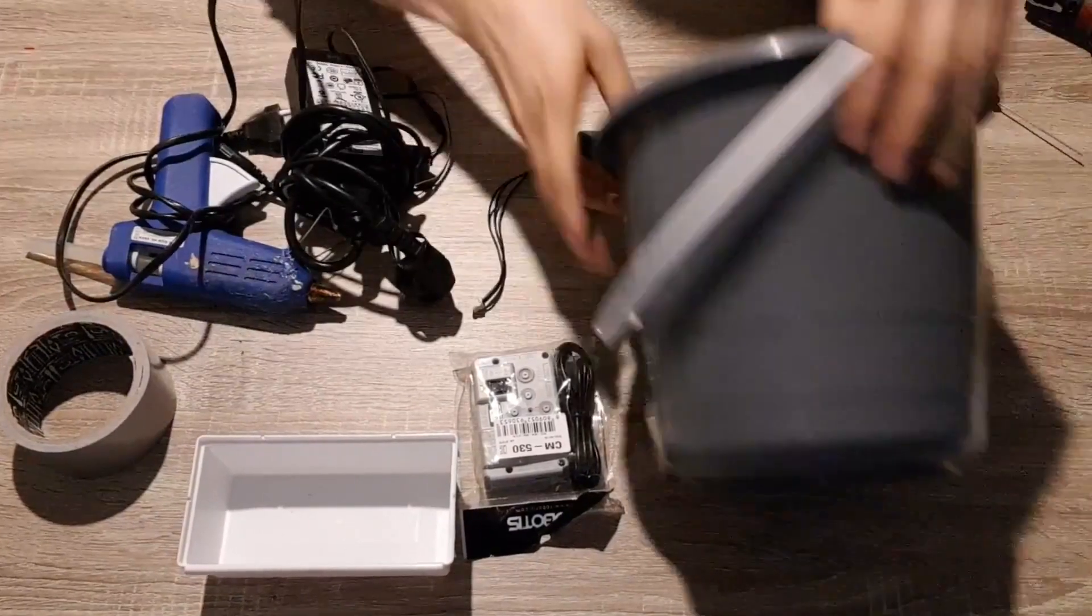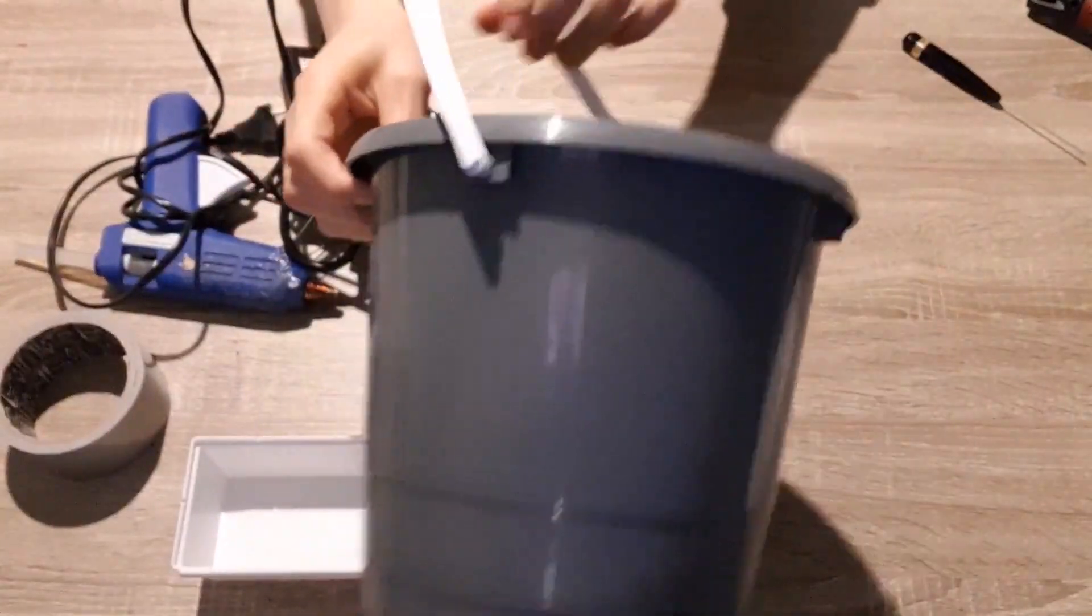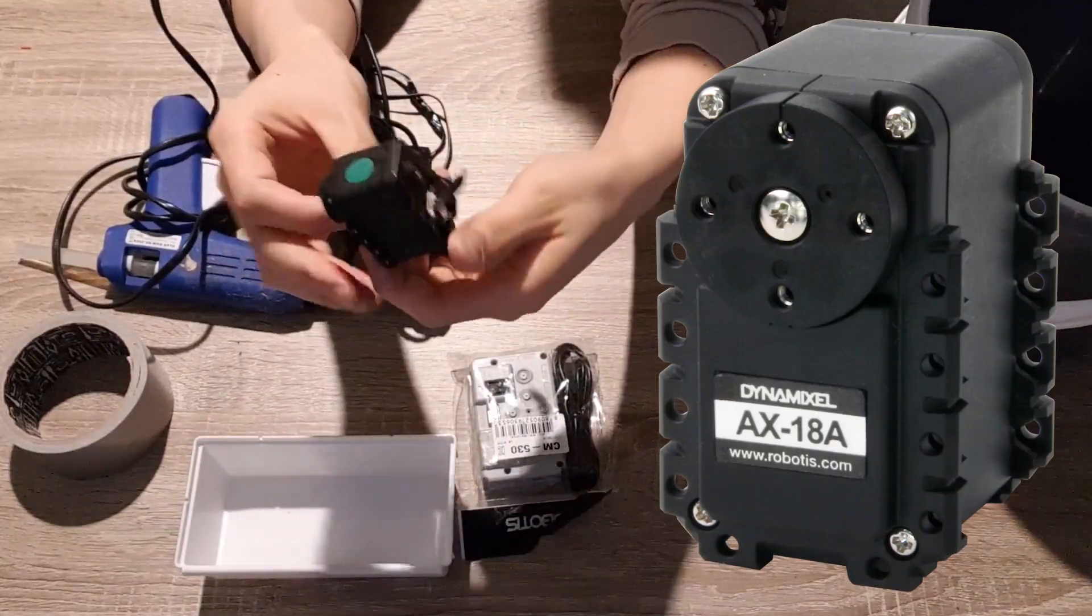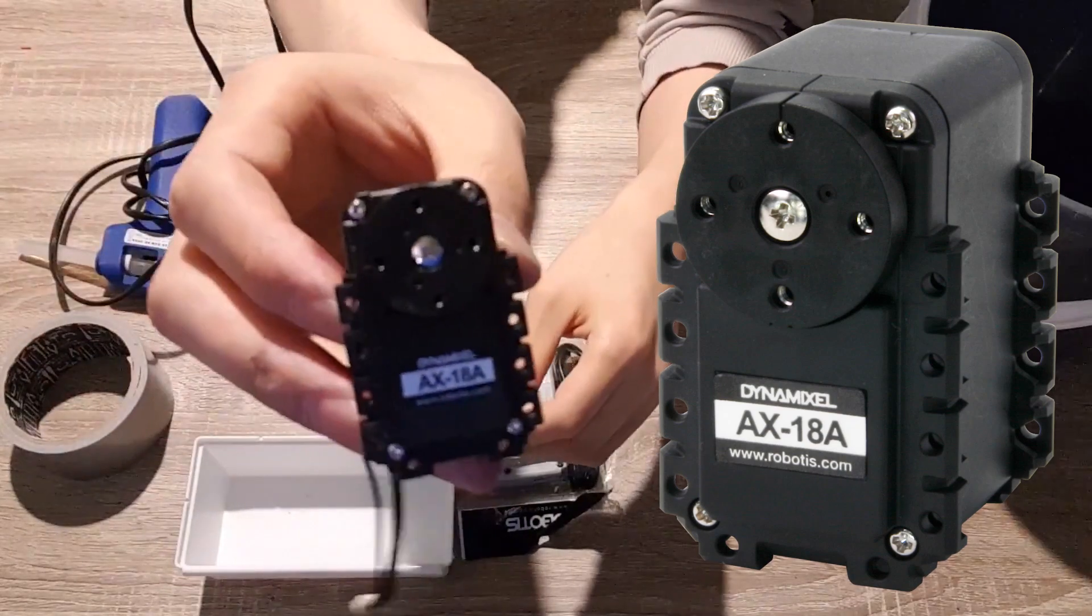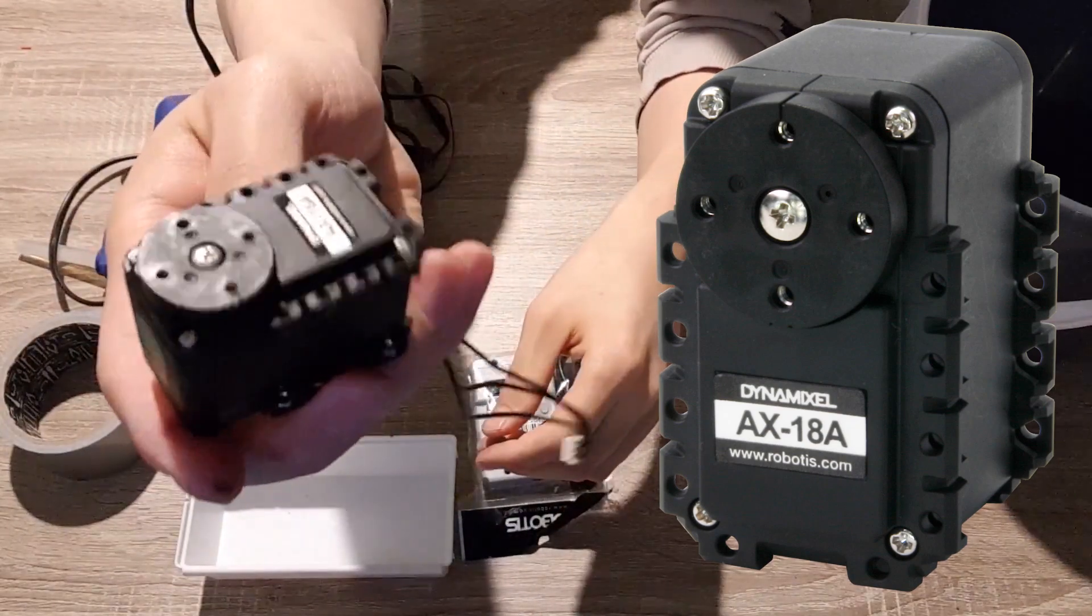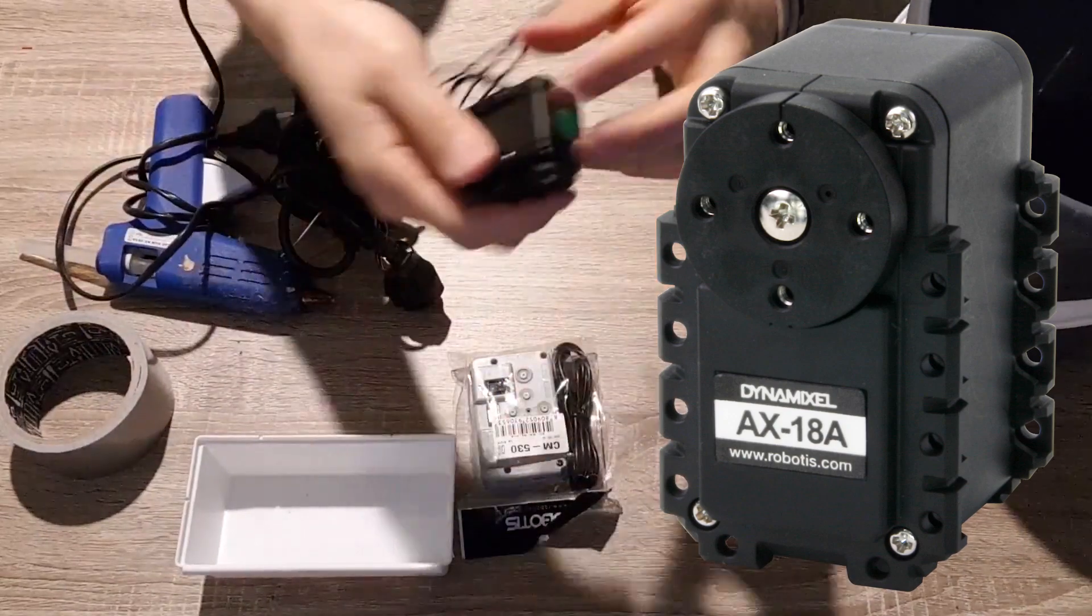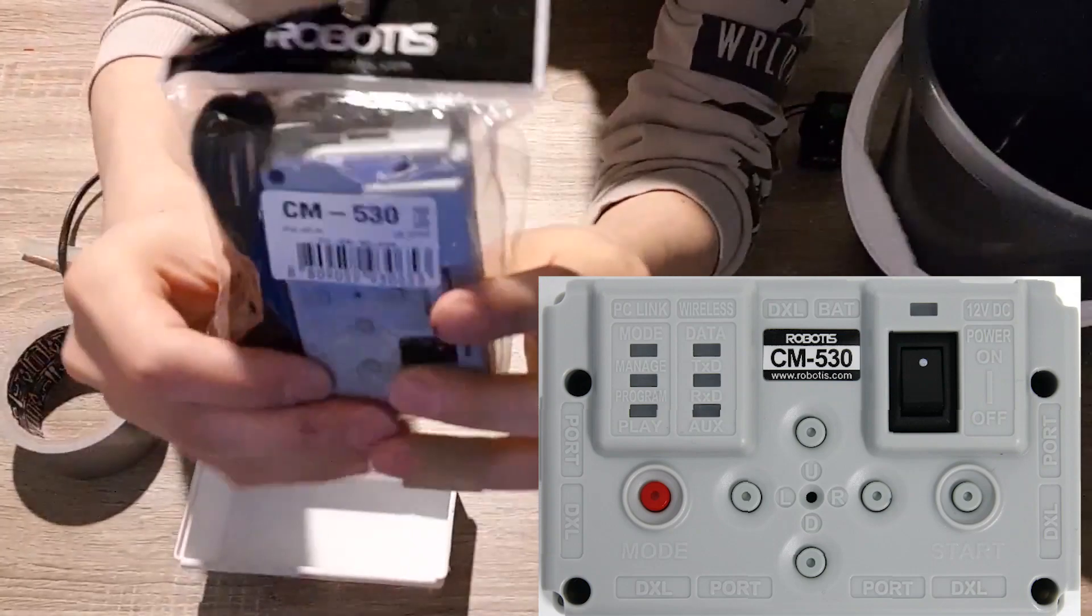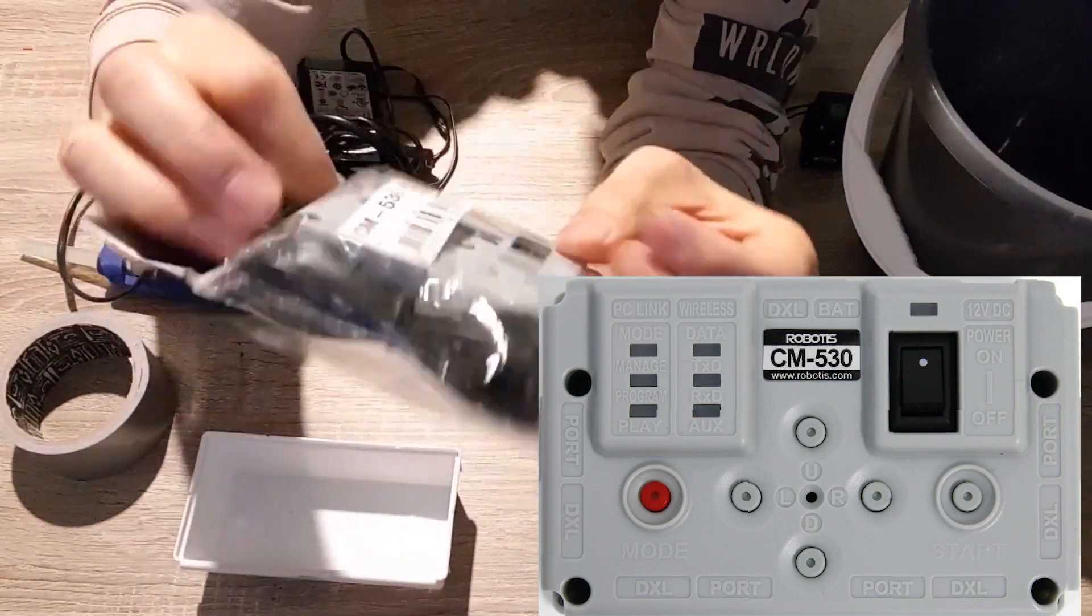These are the things you need to prepare. I'm going to share all the links in the description below as usual. This is the servo motor which is called Robotis servo. This is very smart and strong, so the robot can easily lift any stuff on his hand.